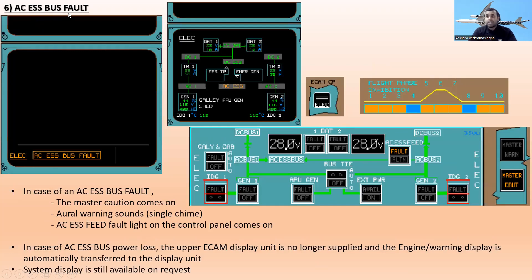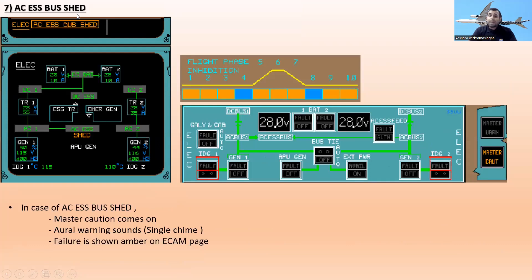The next one is AC essential bus fault. In case of AC essential bus fault, master caution comes on with a single chime oral warning, and the AC essential bus fault light on the control panel comes on. In case of AC essential bus power loss, the upper ECAM display unit is no longer supplied, and the engine warning display is automatically transferred to the display unit. The system display is still available on request by pressing the ELEC push button on the ECAM control panel.